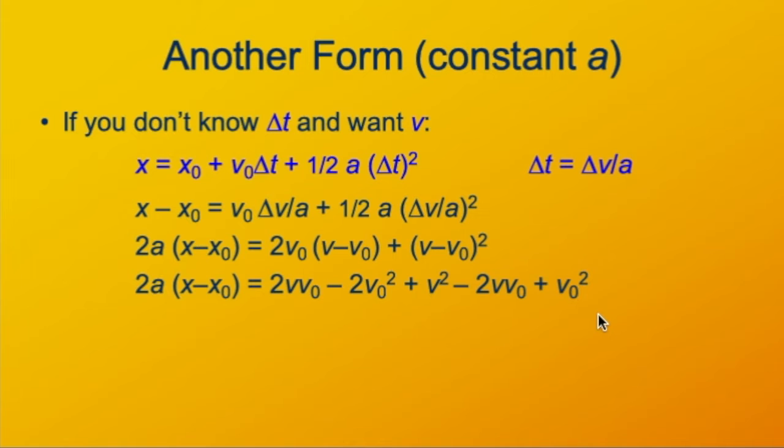Now we combine like terms and simplify. The two vv₀ terms, those are going to cancel. And then we have like terms in v₀². So we have a plus v₀² and a minus two v₀². Those aren't going to quite cancel, but they will combine. And we'll simplify this equation substantially.